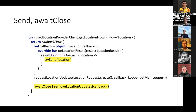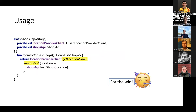We can use this pretty smoothly: we call getLocationFlow on our FusedLocationProvider, then map the most recent location to our list of shops, and that's all. We then receive a flow of shops that will be updated in the UI.